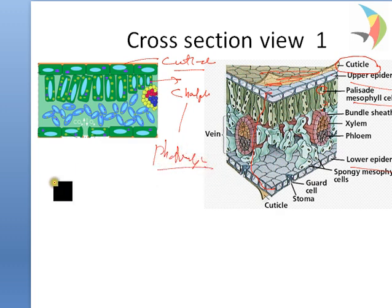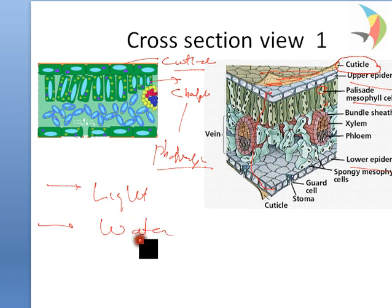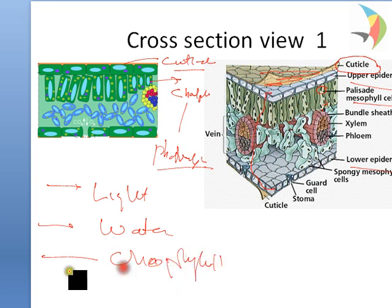For photosynthesis, the plant requires light, they require water, they should have chlorophyll which is found inside the cell giving the green color of the plant, and CO2 carbon dioxide.